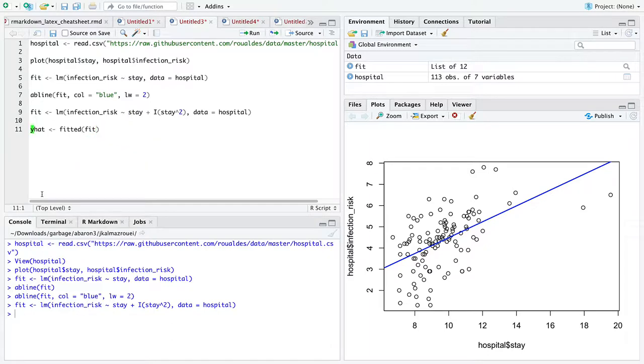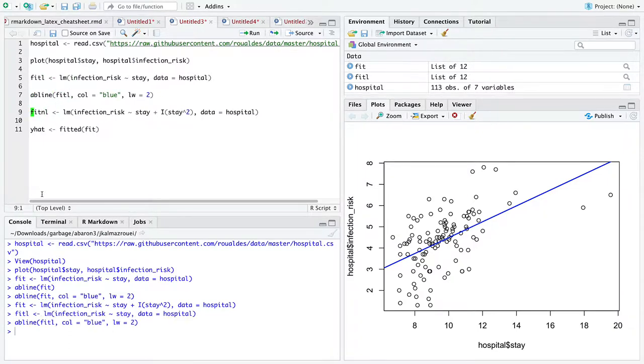Plotting, oh, you know what we should do? We should name this one fit l and nl, just to keep them different. So let's go. Fit nl is going to be the nonlinear looking version.